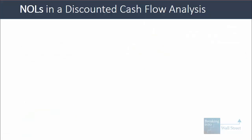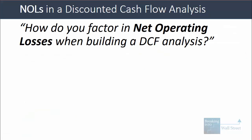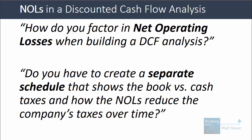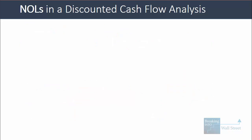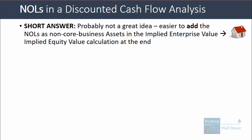Here's the typical question we get on this topic: how do you factor in net operating losses when building a DCF analysis? Do you have to create a separate schedule that shows the book versus cash taxes and how the NOLs reduce the company's taxes over time? The short answer is that it's probably not a great idea to do this. It's much easier to add the NOLs as a non-core business asset in the implied enterprise value to implied equity value calculation at the end.